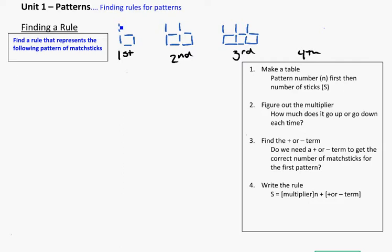If you take a look at this particular pattern, we can think about these being individual matchsticks. We can lay them out, and you see this unit is kind of repeated. The first one you see one sort of chair shape, and in the second one we see that doubled. In the third one you'll see there are three chair shapes there.